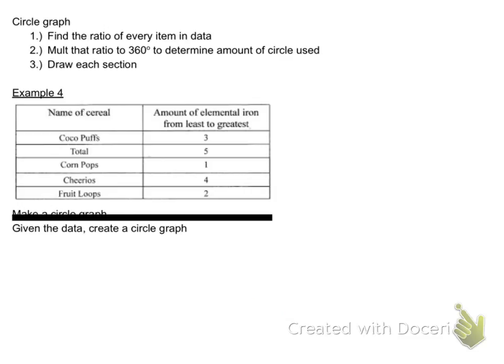Circle graphs, you just find the ratio of every item in the data. Multiply that ratio, 360. Figure out how many degrees are in a circle. That's 360. So, how much is it going to be used? And then you can use the fact to draw yourself using the degrees. Use a compass if you need to. And a protractor to figure out how many degrees in there. So, find the ratio. Well, to find the ratio, you need to say how many are there to the total.